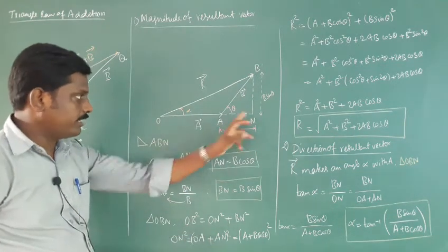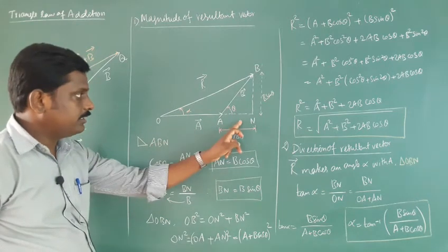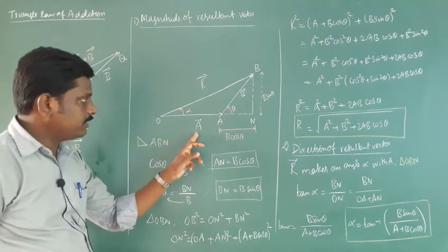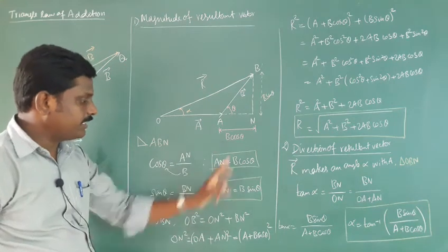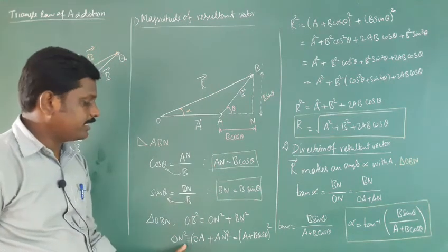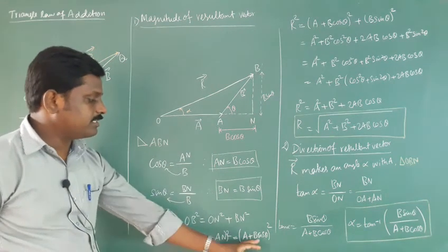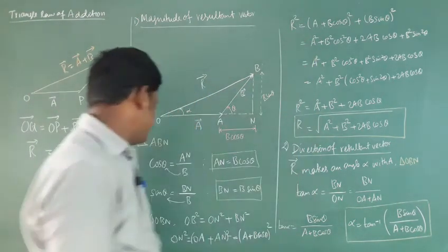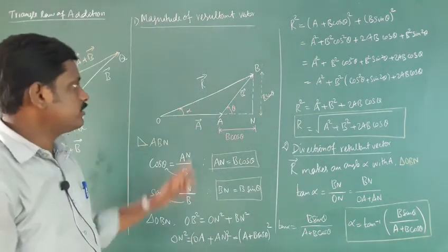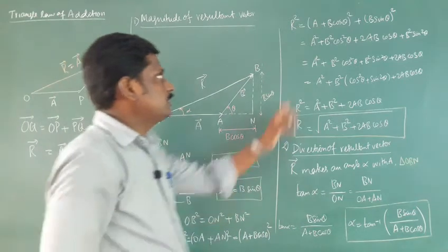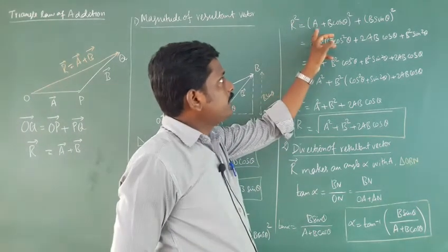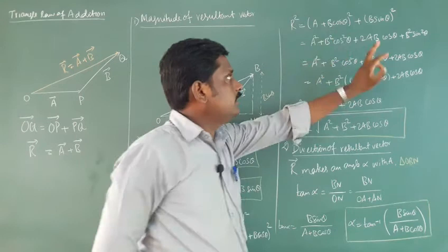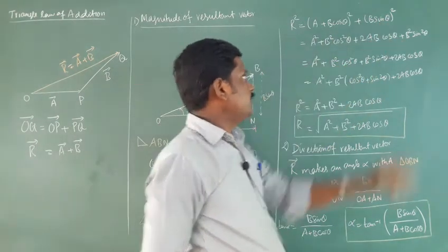ON squared equals OA plus AN, the whole squared. Since OA equals A and AN equals B cos theta, we get ON squared equal to A plus B cos theta, the whole squared. The resultant OB squared is R squared, so R squared equals A plus B cos theta whole squared plus B sin theta whole squared.